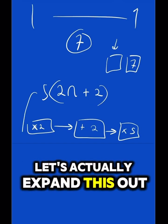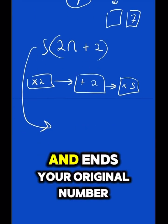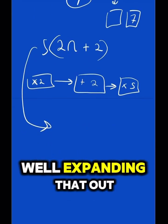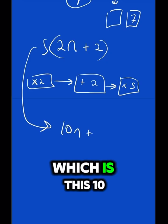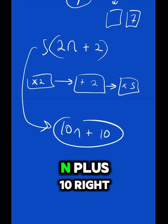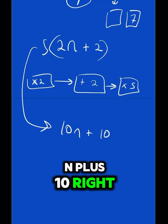What does this do? Let's actually expand this out. This is all I've asked you to do, and it ends your original number. Expanding that out, you've probably already done this, which is 10n plus 10, right? What would that do?